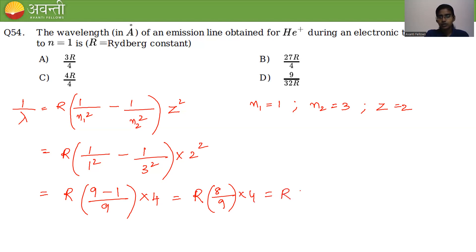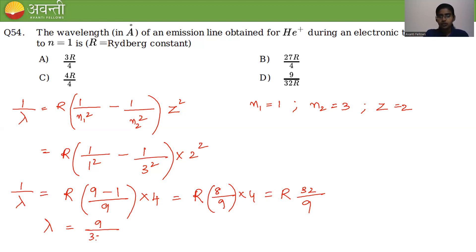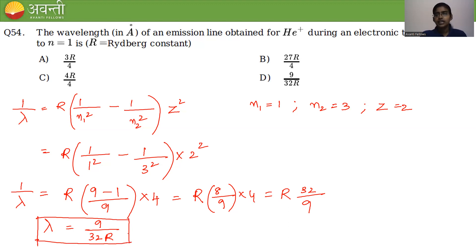That equals R × 32/9. So 1/λ = 32R/9. But we need only lambda, so just reverse it: λ = 9/(32R). This is the wavelength in angstroms of the emission line for helium-plus.